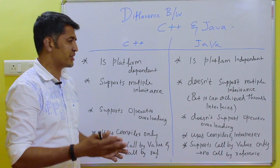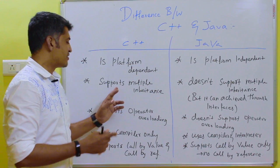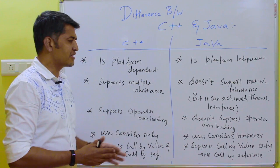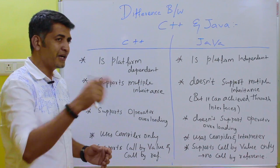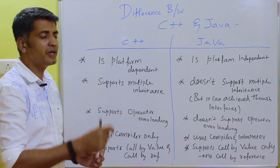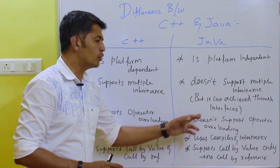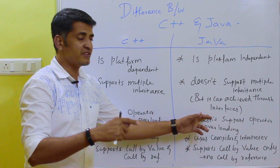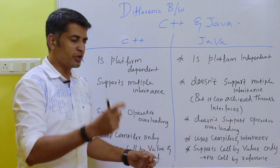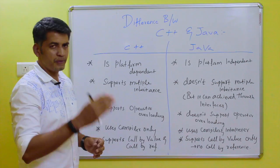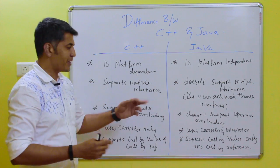C++ supports multiple inheritance, but Java does not support multiple inheritance directly. However, the multiple inheritance concept can be achieved through interfaces in Java.